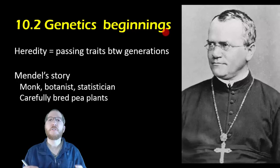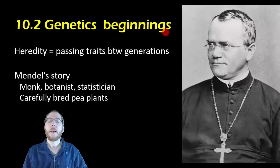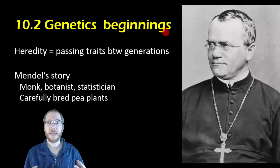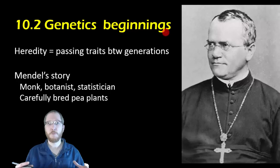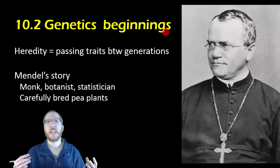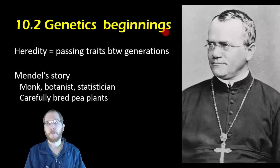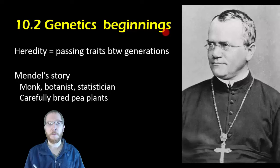The first person to really dig into this and disprove the prevailing ideas — called the blending hypothesis — was Mendel. People just figured that if one person's tall and one's short, your kid should be somewhere in between. If your kid happens to be taller than you, apparently you weren't the person involved in that particular mating event.